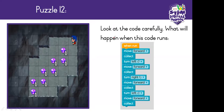This is what puzzle 12 looks like. Your instructions will say: look at the code carefully — what will happen when this code runs? The first block says move forward, so Laurel is going to move here. Our very next block says collect. If you tell Laurel to collect something but there's nothing there, your code will stop running. It's not going to run anymore, it's going to just stop. It will tell you there's an error, there's a mistake.